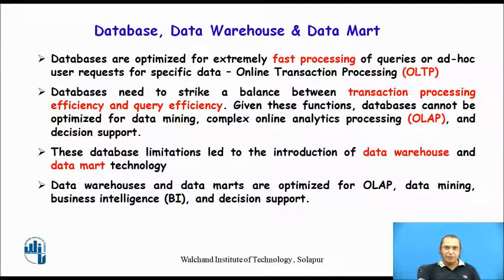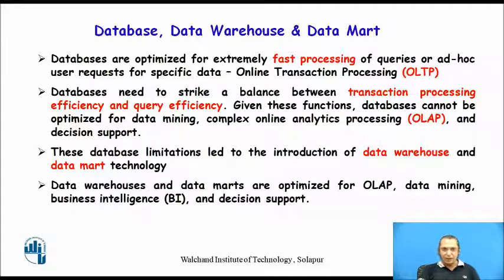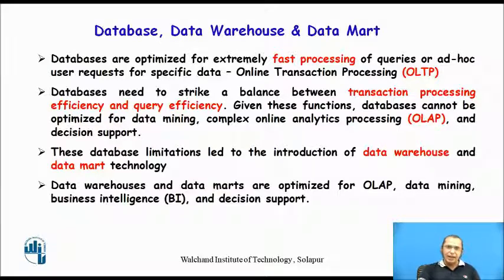Databases need to strike a balance between transaction processing efficiency and query efficiency. There can be transactions where data need to be updated, or select-type queries where information needs to be extracted. Given this function, a database cannot be optimized for applications like data mining, complex online analytical processing, or decision support. Hence, these limitations of the database, which is used for OLTP, lead to a different type of database called the data warehouse and data mart.